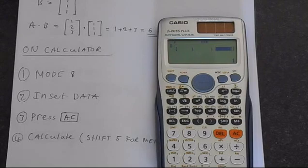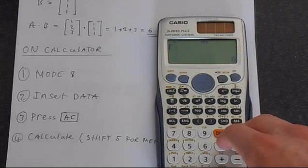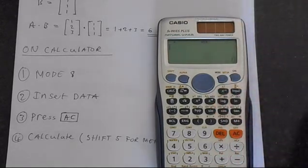So now we've inserted our data. We have to save this. To do this we press the AC button, which is where the off button is. So that's the data now in the calculator's memory.